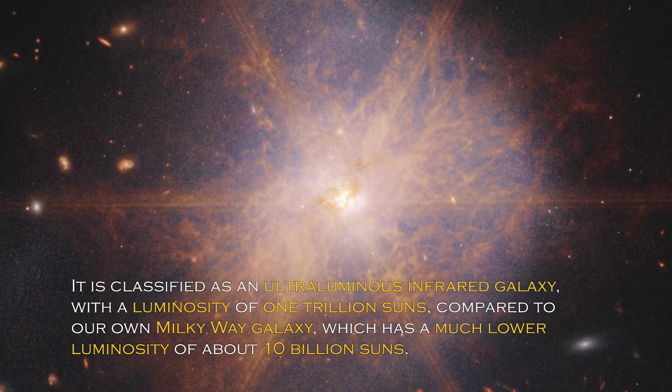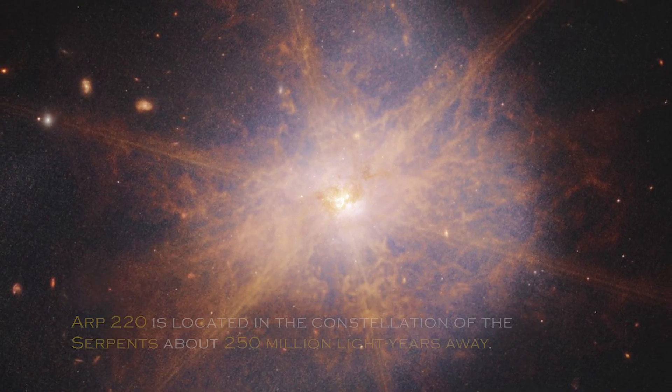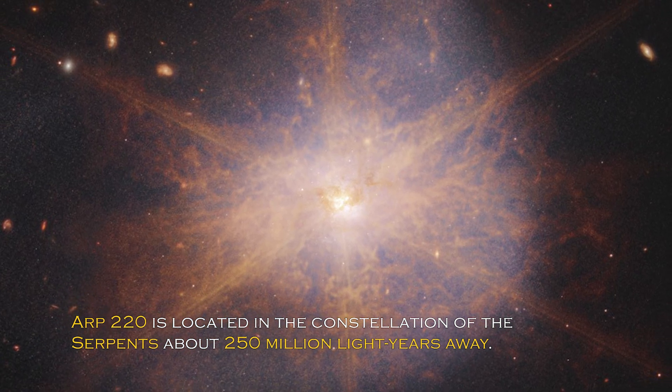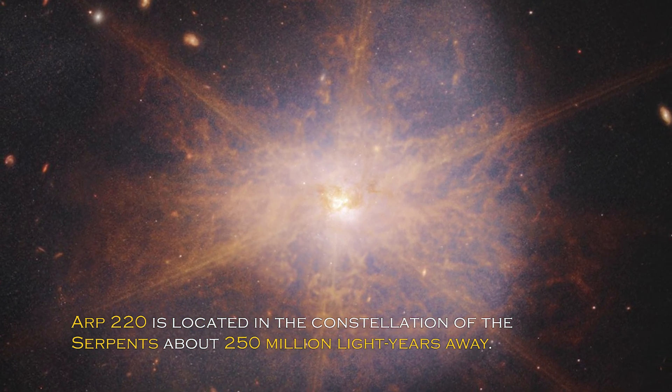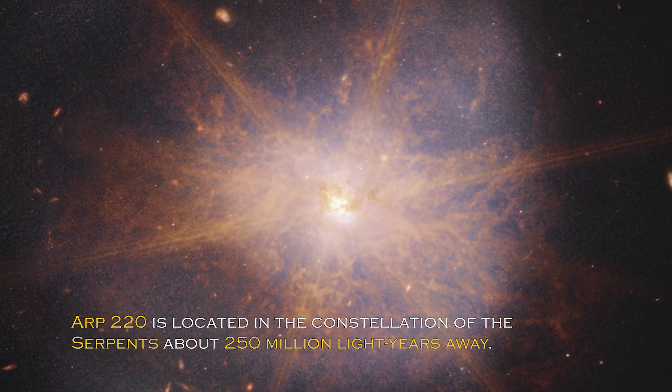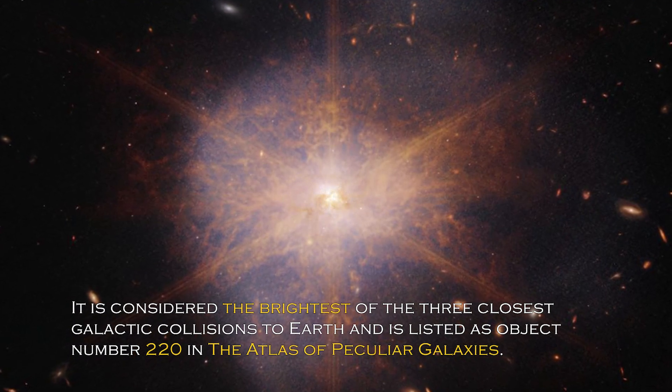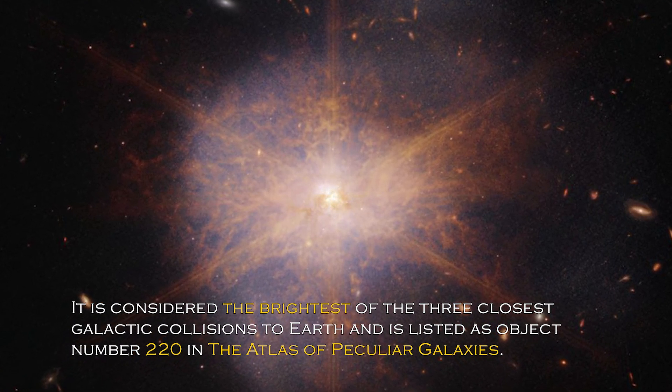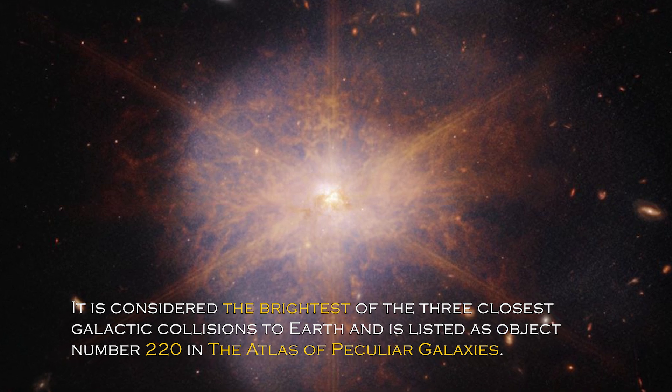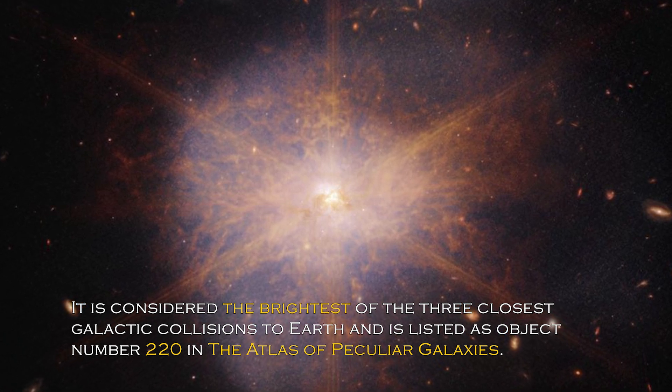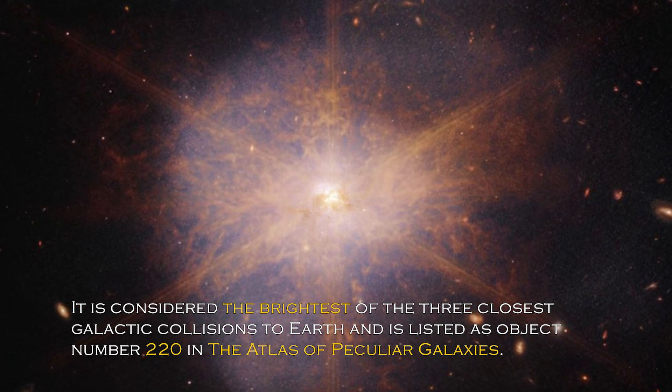ARP 220 is located in the constellation Serpens, about 250 million light-years away. It is considered the brightest of the three closest galactic collisions to Earth, and it is listed as object number 220 in the Atlas of Peculiar Galaxies.